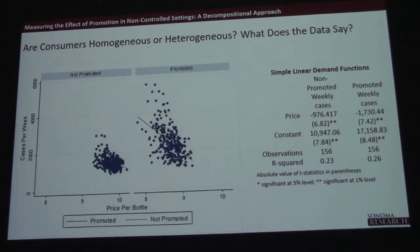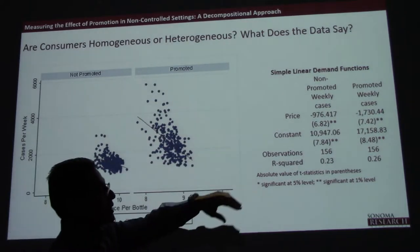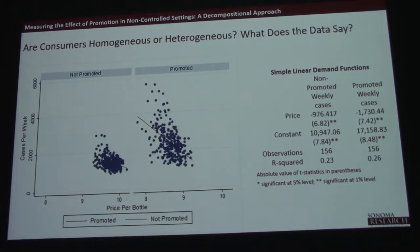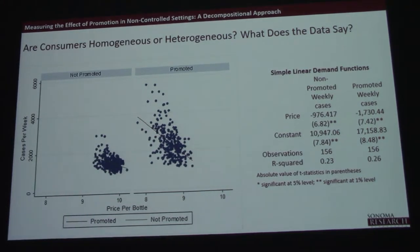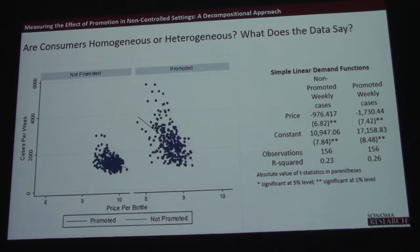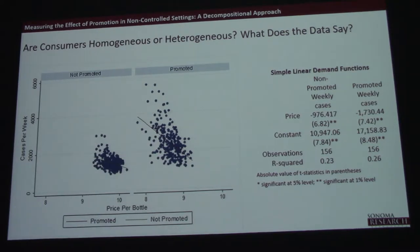So price sensitivity — people that buy on promotion are much more price sensitive. We kind of knew that already. Your grandma or uncle will only buy this stuff on promotion. Why do you have 14 boxes of crackers? Because they were on sale. Why are we drinking Bud Light? Because it was on sale.